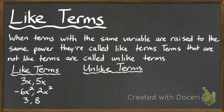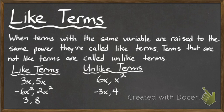Unlike terms would be examples like 6x and x squared — these are different, like comparing apples to oranges, they're not the same type. Another example is negative 3x and 4 — an x term and a constant are not the same. Those are examples of unlike terms. When we get to later lessons, we'll see how to use these definitions to add, subtract, and multiply polynomials. For now, hopefully you have a basic understanding of what simple polynomials and polynomial expressions look like.